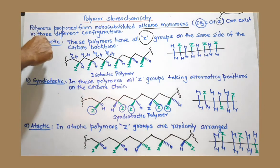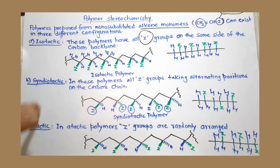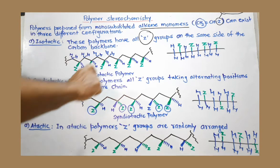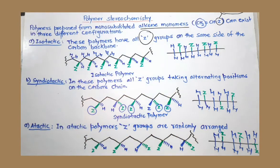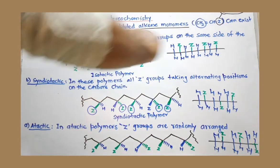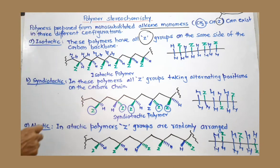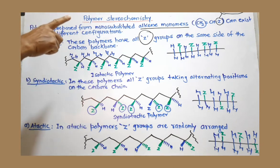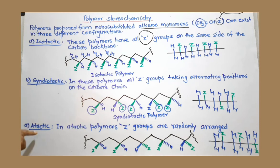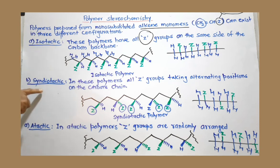These stereoisomers are also called tacticities. Tacticity means the arrangement of side chains on the carbon chain in three-dimensional space. There are three types of tacticities: isotactic polymer, syndiotactic polymer, and atactic polymer. This is all about polymer stereochemistry.